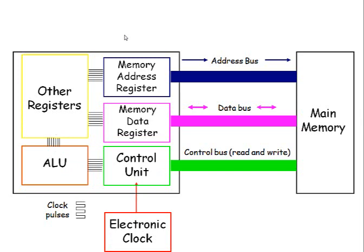We've got registers, which is the temporary RAM memory in the processor. There are two main ones you're going to have to know about: the memory data register and the memory address register.